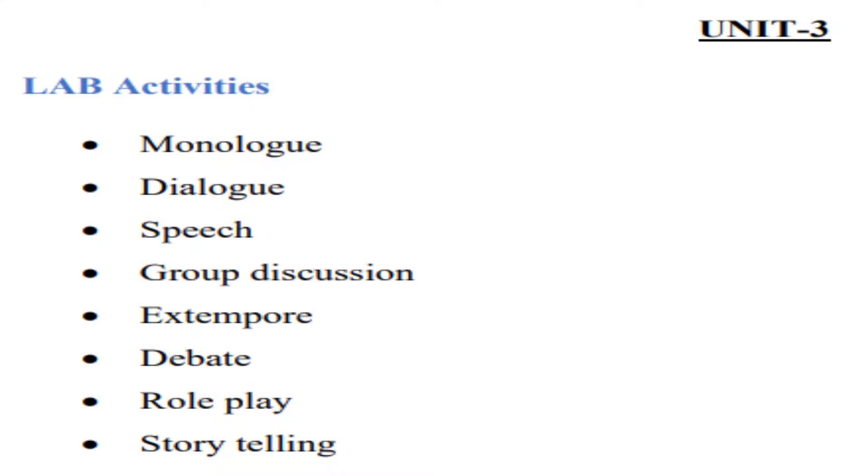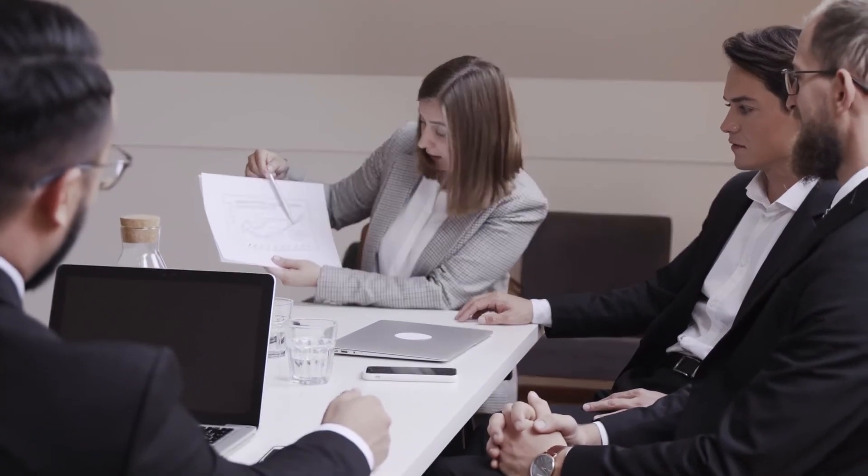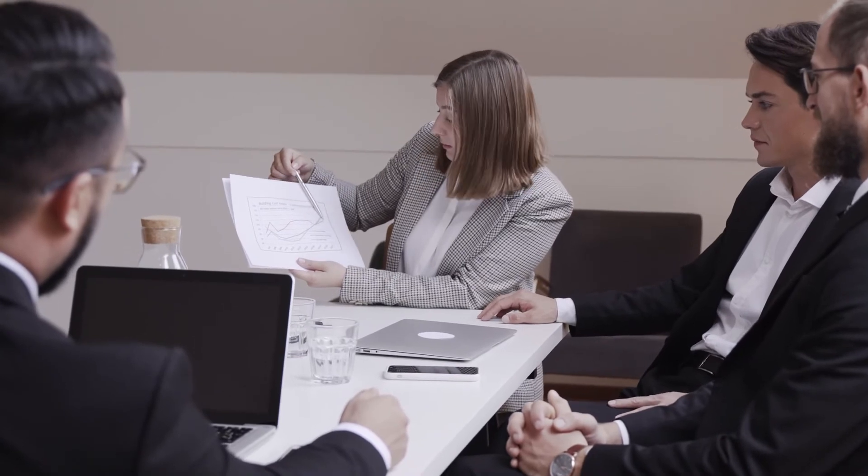Next we have Unit 3 — lab activities. As I was saying, practicals are more important than theory, because learning is easy but execution takes some time. This unit is designed to break your shyness, kill your fear, and help you speak fluently. In lab activities we have monologue, dialogue, speech, group discussion, extempore, debate, role play, and story telling — all of which will be very fun and will help you speak confidently.